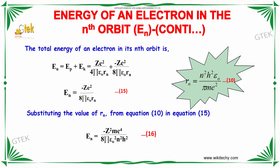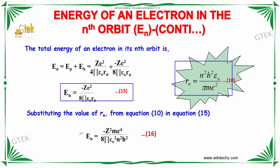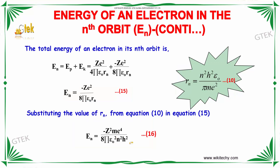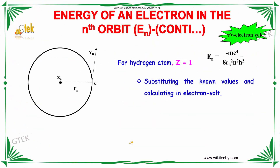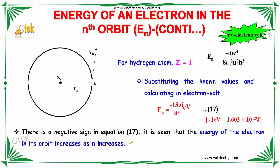Putting the value of Rn into the total energy equation, we get the total energy as minus Z²me⁴ / (8ε₀²·n²·h²). For the hydrogen atom where Z = 1, the total energy becomes minus me⁴ / (8ε₀·n²·h²).